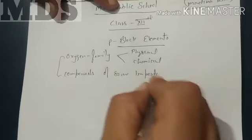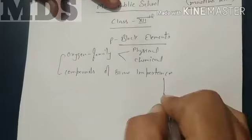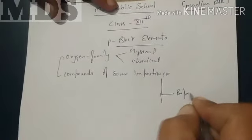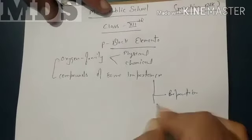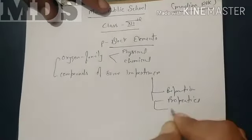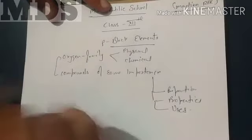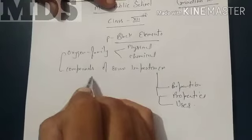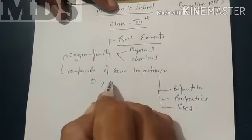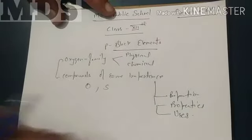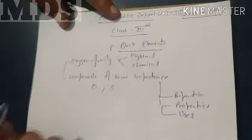About every compound, I have told you three things you have to do: its preparation, its properties, and its uses. These three things about every compound. So, in oxygen family, we have to study about the compounds of oxygen and sulfur. These are the two important elements whose compounds we will discuss particularly. So, let's start with the oxygen.